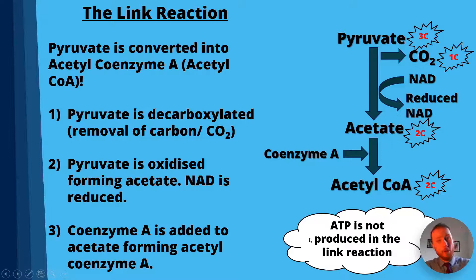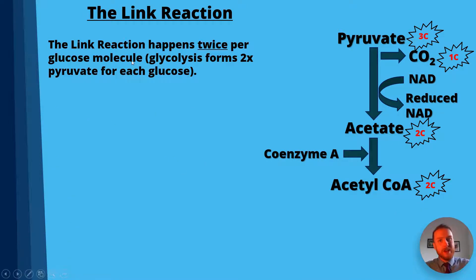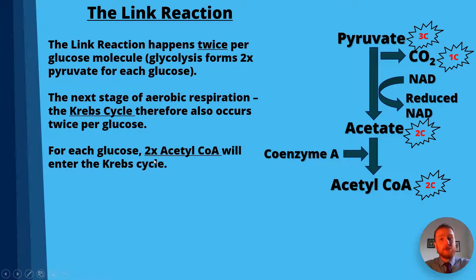ATP is not produced in the link reaction — that's something really important to remember. Glycolysis, the Krebs cycle, and the electron transport chain all produce ATP, but the link reaction doesn't. The link reaction happens twice per glucose molecule because glycolysis forms two pyruvate per glucose, meaning we get two link reactions. This gives us two acetyl coenzyme A per glucose, which is why we get two turns of the Krebs cycle.